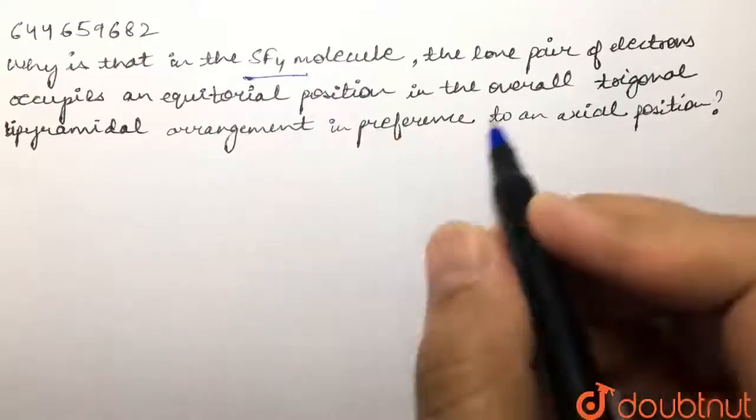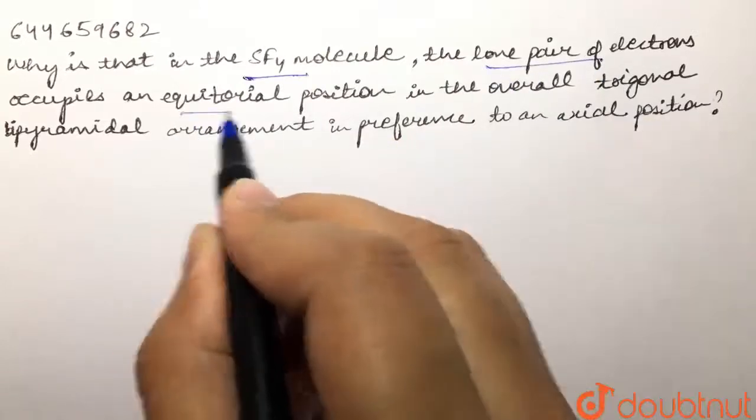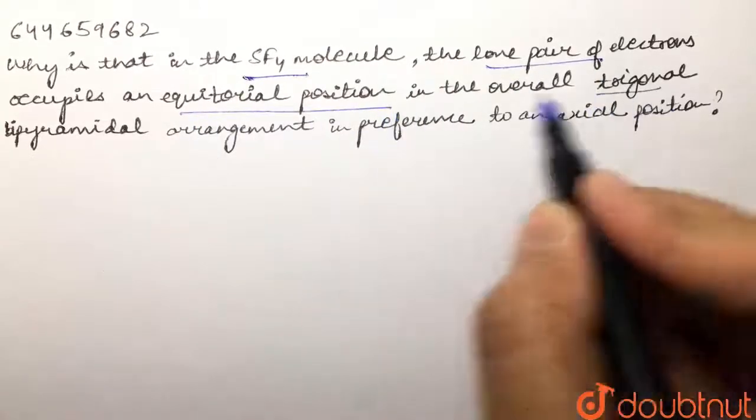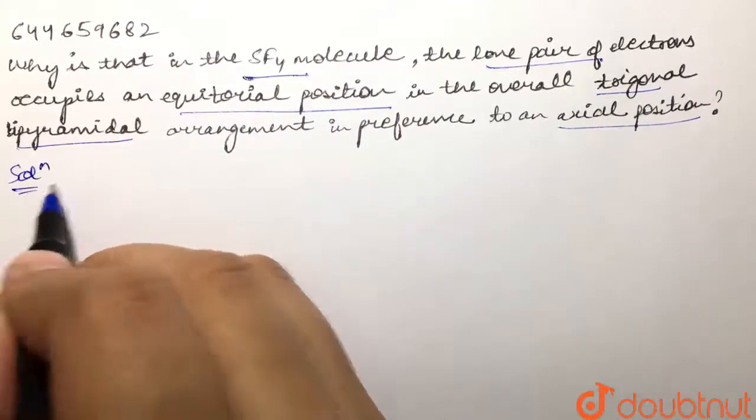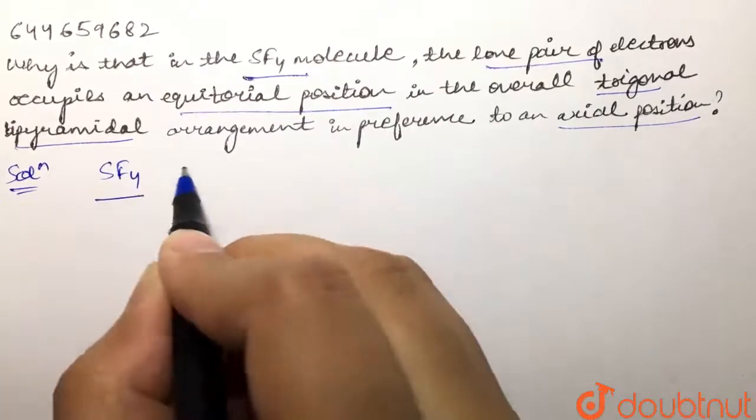Our question is: Why is it that in SF4 molecule, the lone pair of electrons occupies an equatorial position in the overall trigonal bipyramidal arrangement in preference to an axial position? We need to explain why in case of SF4, which has a trigonal bipyramidal geometry, the lone pair occupies the equatorial position rather than axial position.